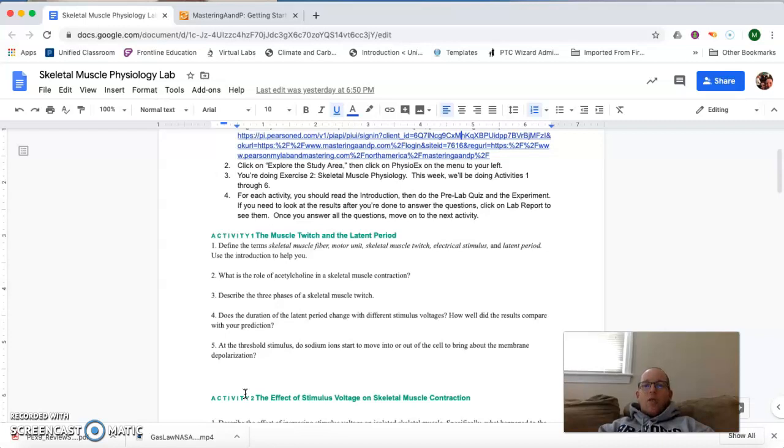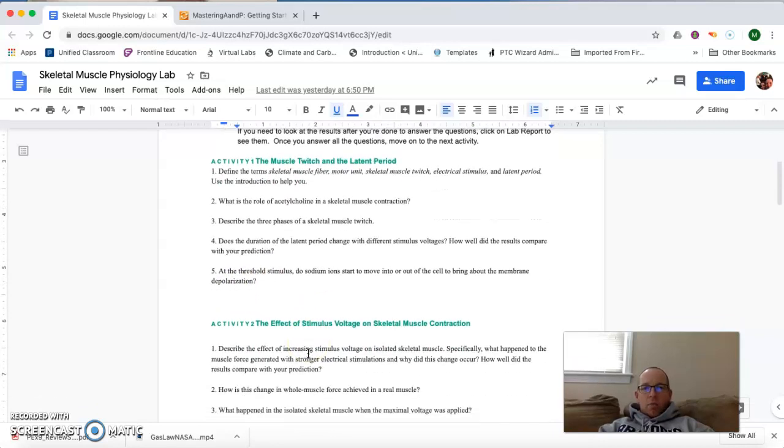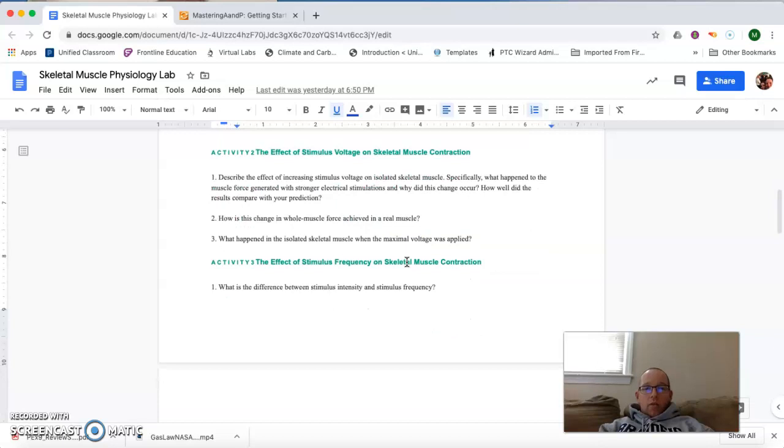You are going to be doing six different activities to explore six different aspects of muscle contraction. The first one, you're going to basically just learn what a muscle twitch is all about, you're going to define some terms. On this lab, on all six parts, it's really important that you read the introduction. A lot of the answers that you need, you're actually going to be able to get directly from the introduction. And in activity two, you're going to figure out how increasing and decreasing the voltage affects the strength of muscle contraction and how much force a muscle can generate.